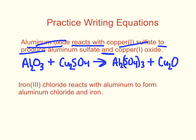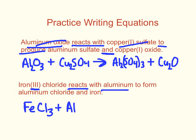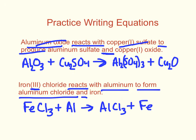Iron(III) chloride is Fe — not a three subscript, check the charges. Iron has a plus three because of the Roman numeral three; chlorine has a minus one from the periodic table, so it's FeCl₃. Reacts with — that's a plus. Aluminum: just plain aluminum, Al. To form — arrow. Aluminum chloride: AlCl, check the charges — aluminum has a plus three, chlorine has a minus one, so AlCl₃. Plus iron, which is just Fe by itself — no charges to check. There's that skeleton equation.